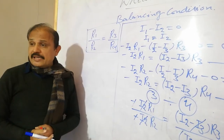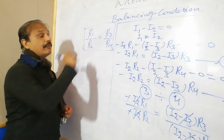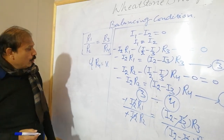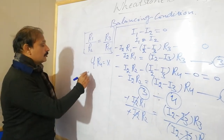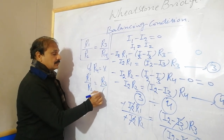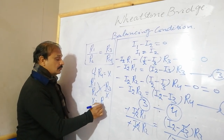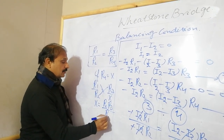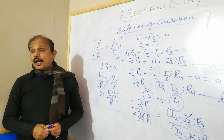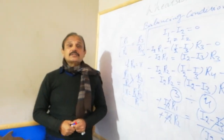This circuit can be used to find the value of an unknown resistance. Let's suppose R4 is unknown and we call it X. Substituting into our relation: R1 over R2 equals R3 over X. Cross-multiplying gives X equals R2 times R3 divided by R1. In this way you can find the value of the unknown resistance. Next time, inshallah, we will discuss more. Thank you all so much.